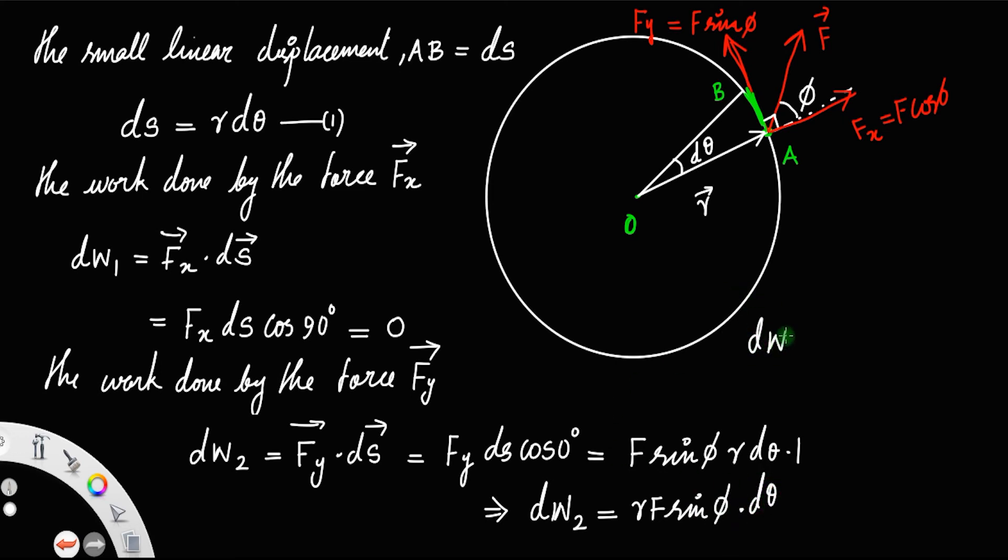dW2 is equal to, now look at this, r F sin phi. That is force into perpendicular distance. Force into perpendicular distance is the torque, or the equation of torque is actually r F sin phi.